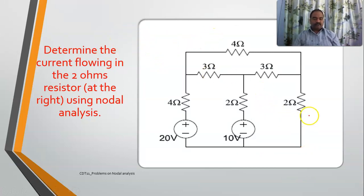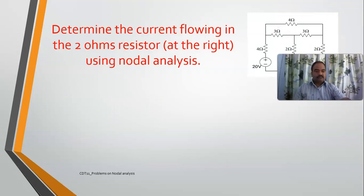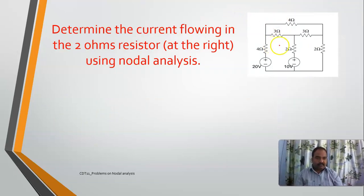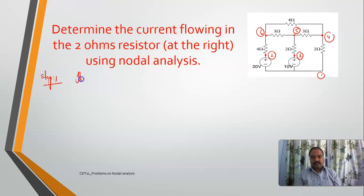Now we will be trying to determine the current in this particular network using nodal analysis. We have tried mesh analysis in our previous week; now for the same network we will try using nodal analysis. The first step is to identify the nodes. Any point in this circuit where two or more elements are connected is called a node. So totally there are six nodes. Step one: there are six nodes in the circuit. Out of which we will now identify how many of these are effective nodes.